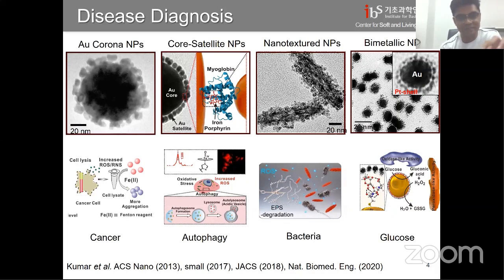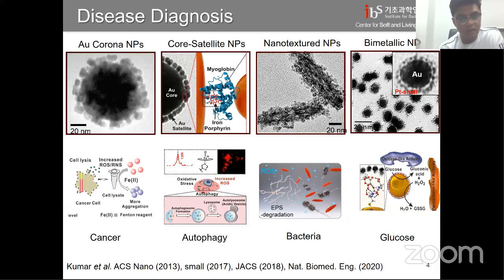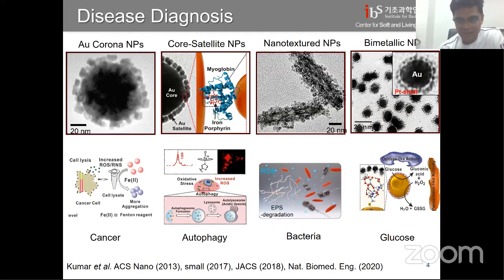The core-satellite nanoparticles have a nano-core of around 100 nanometers, coated with polymers where you can put any Raman reporter. Here we use myoglobin, which is selective for autophagic detection, allowing real-time autophagy monitoring. The next is nano-textured particles with a very fine texture on the surface, which helps them penetrate difficult environments like biofilms. These are also used for diagnosis.